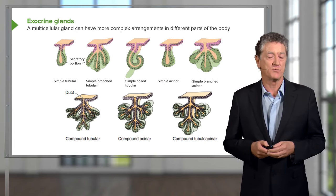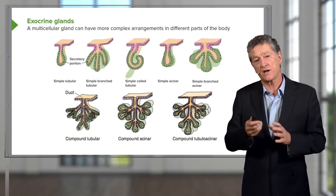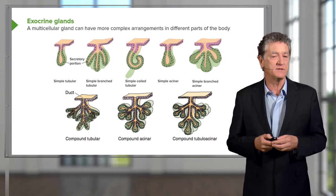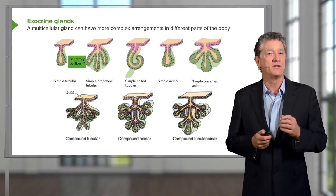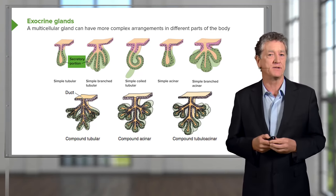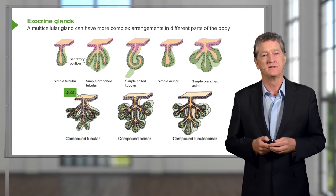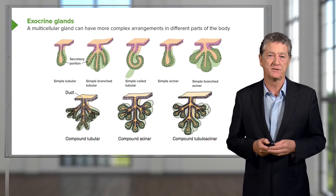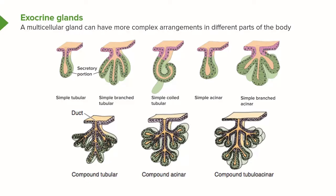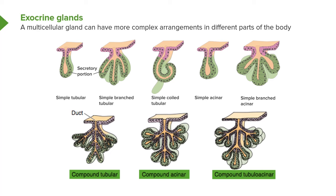Multicellular glands can acquire a duct, rather than just secreting onto the surface like a goblet cell or cells in the stomach mucosa. During development, when the epithelium invaginates into the underlying lamina propria, the portion connecting the invaginated epithelial cells to the surface is retained, forming a conduit or duct. The deeper epithelial cells become the secretory cells. We can further classify multicellular glands by their ducts — if the ducts don't branch, we call it a simple gland; if the duct branches, as shown in three diagrams at the bottom of this slide, we call it a compound gland.